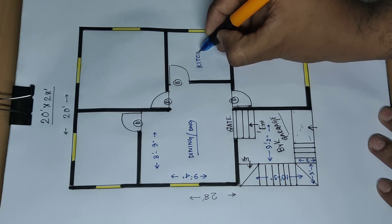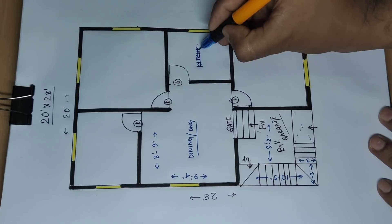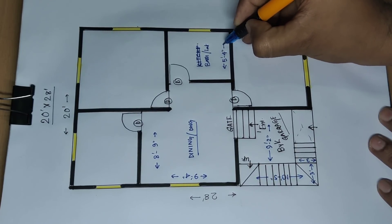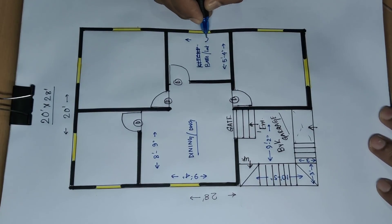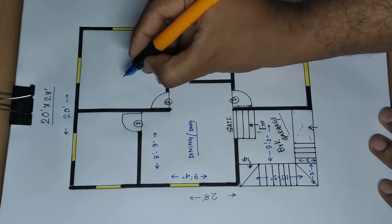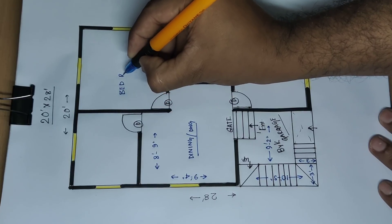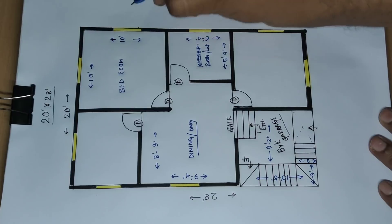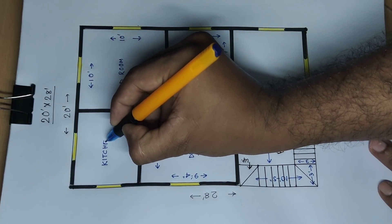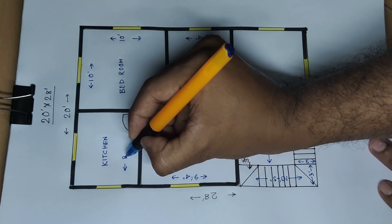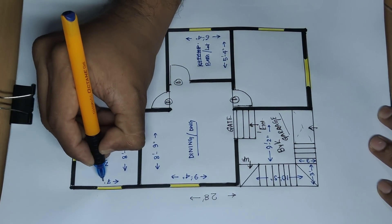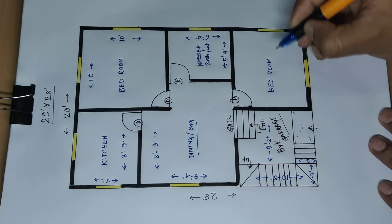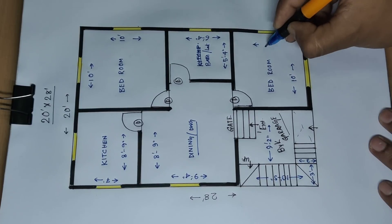This is kitchen. This is bath and WC — distance 5 feet 4 inch and this side distance 6 feet 4 inch. This is bedroom — distance 10 feet and this side distance 10 feet. This is kitchen — distance 8 feet 9 inch and 8 feet 9 inch and this side distance 7 feet. This is bedroom — front side bedroom, guest room — distance 10 feet and this side distance 10 feet.